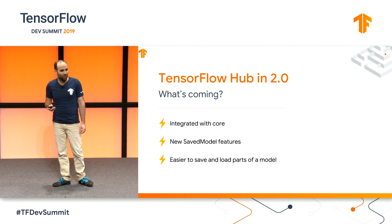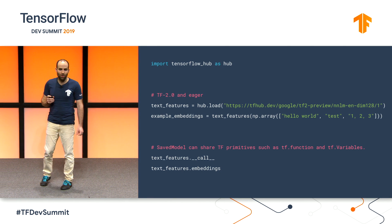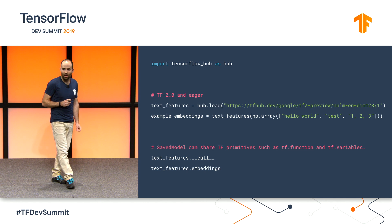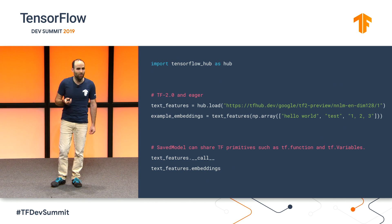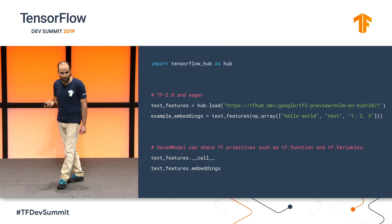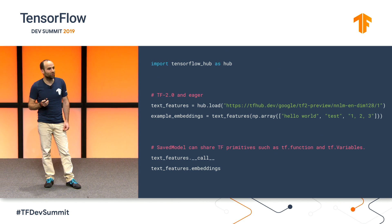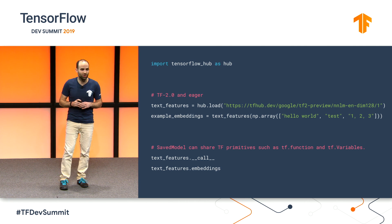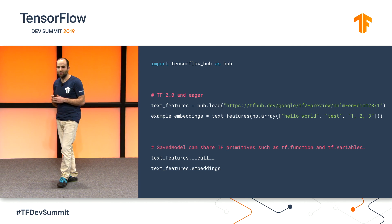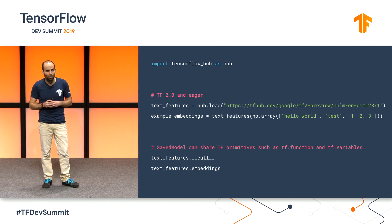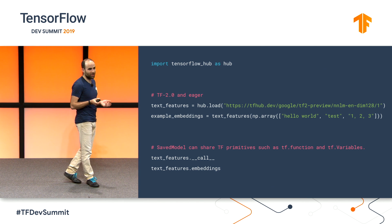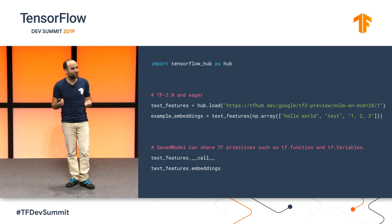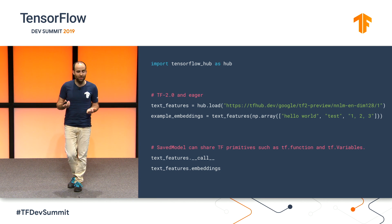Let's look at a few examples. In TensorFlow 2.0, we can load a module with hub.load. We can also use tf.savedmodel.load if the model is already on our file system. Due to eager execution, once loaded, we can call it right away. Additionally, due to the new capabilities, you can now share any object which is composed of TensorFlow primitives. So in this case, text_features has two members: call, which is a tf.function, and embeddings, which is a tf.variable.